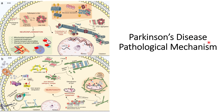Today we will discuss Parkinson's disease pathological mechanisms. We have covered a video on this topic in the past; you can refer to that video. However, in this video we will discuss in greater depth. Only 10 to 15 percent of Parkinson's disease occurs because of genetic mutations; the rest occurs because of disruptions in cellular homeostasis, which may lead to mitochondrial impairment, lysosomal impairment, axonal transport abnormalities, and disruptions in synaptic trafficking.